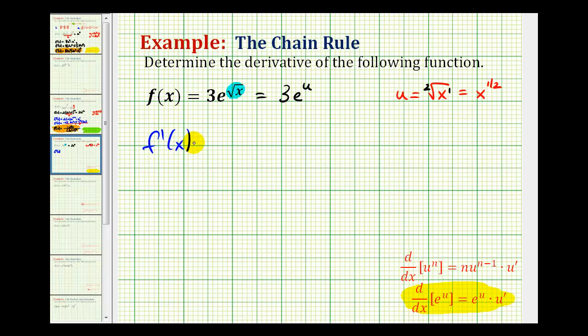So f prime of x is going to be equal to 3e to the u times u prime. So we know u is the square root of x, but we still need to find u prime.